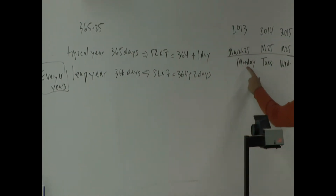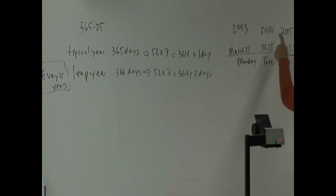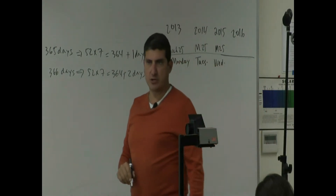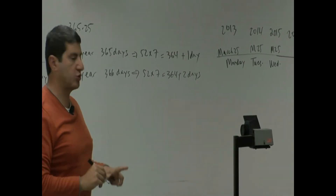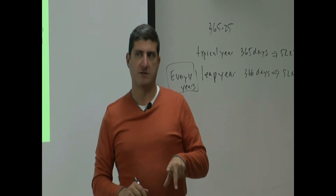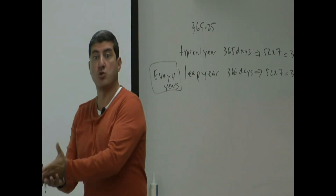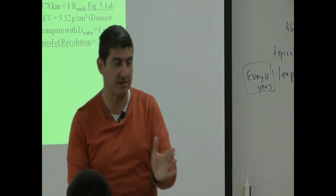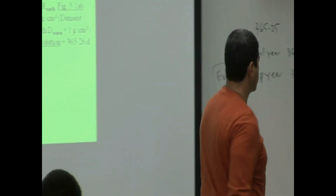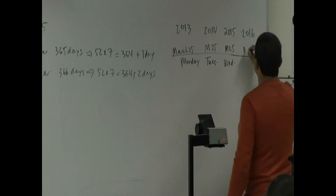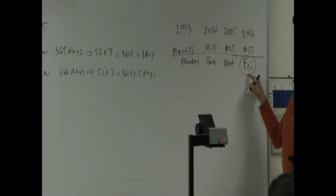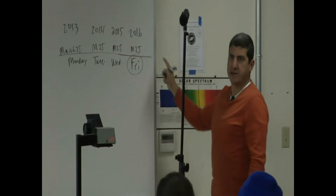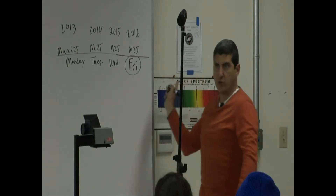So March 25: Monday in 2013, Tuesday in 2014, Wednesday in 2015. Then 2016 should be a leap year — 2012 was a leap year, so 2016 is the next one. March 25, 2016 will be a Friday. Why? Because February 29 is in between — it adds an extra day, bumping the date up two days. After that the same pattern continues: Saturday, Sunday, and so on.